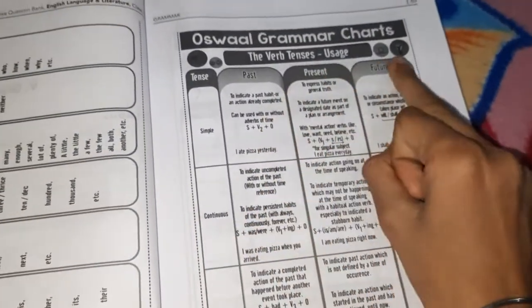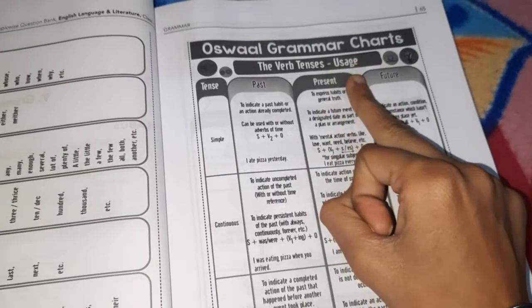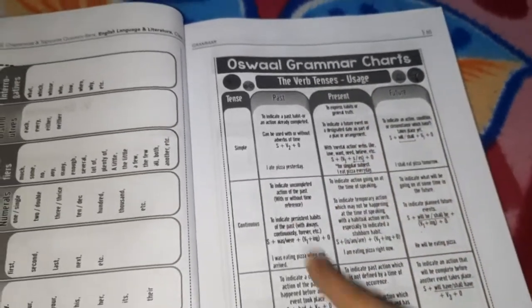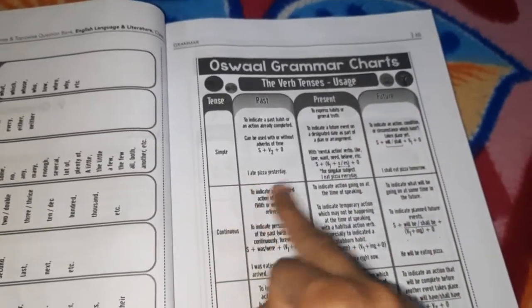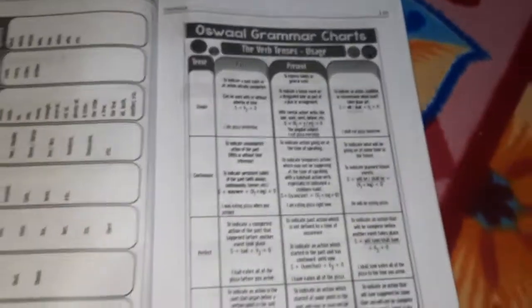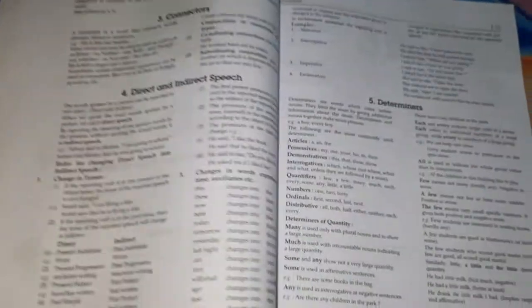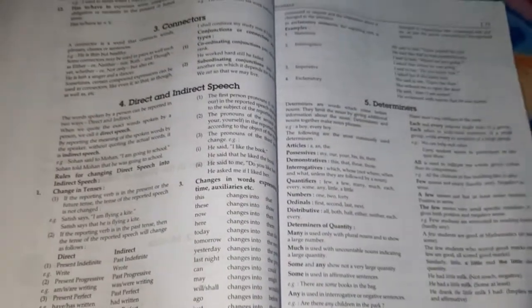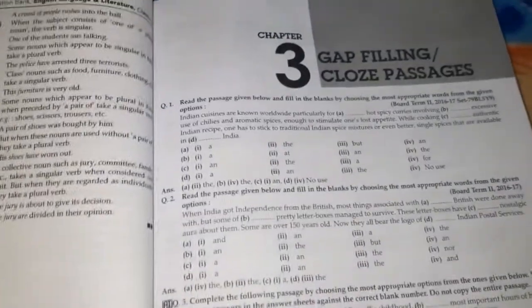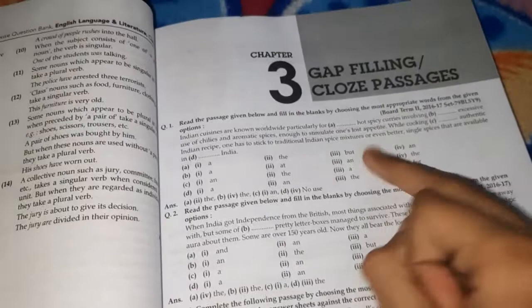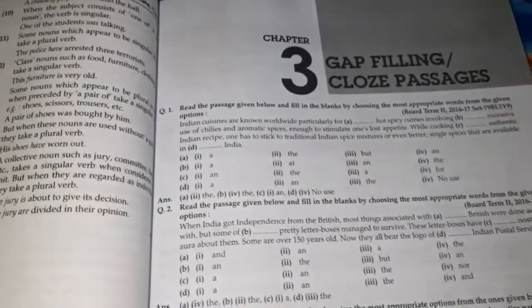Next are grammar charts — verb tenses and their usage. It covers simple past, present, and future tenses. They have explained it very well. Next is the grammar part and then they have explained gap filling. You can see cloze passages.